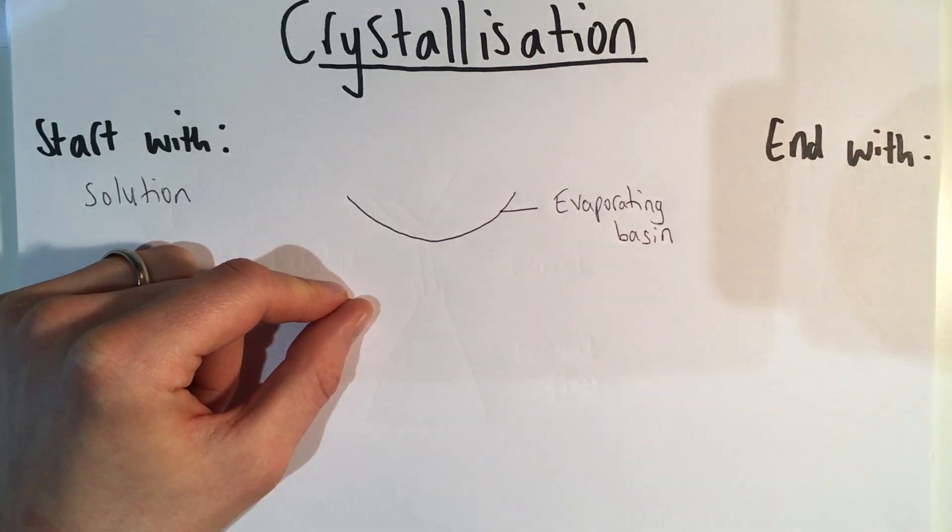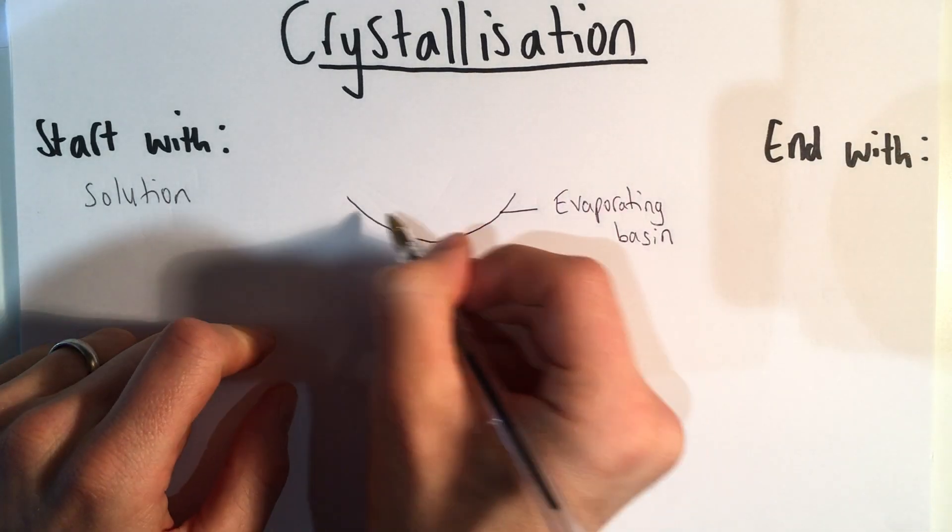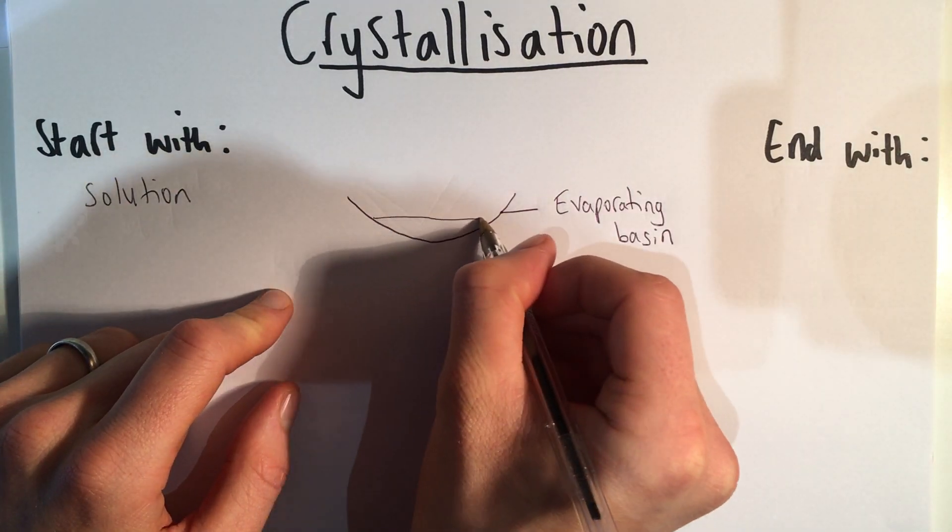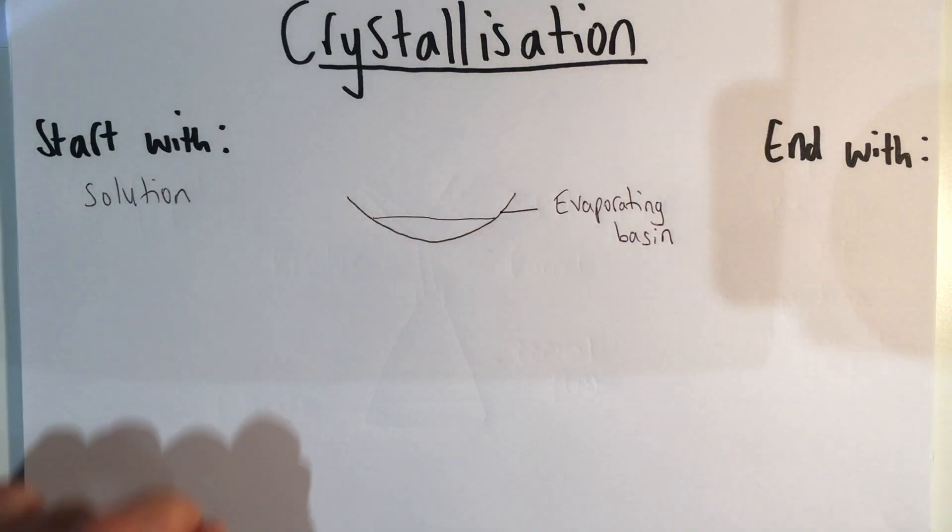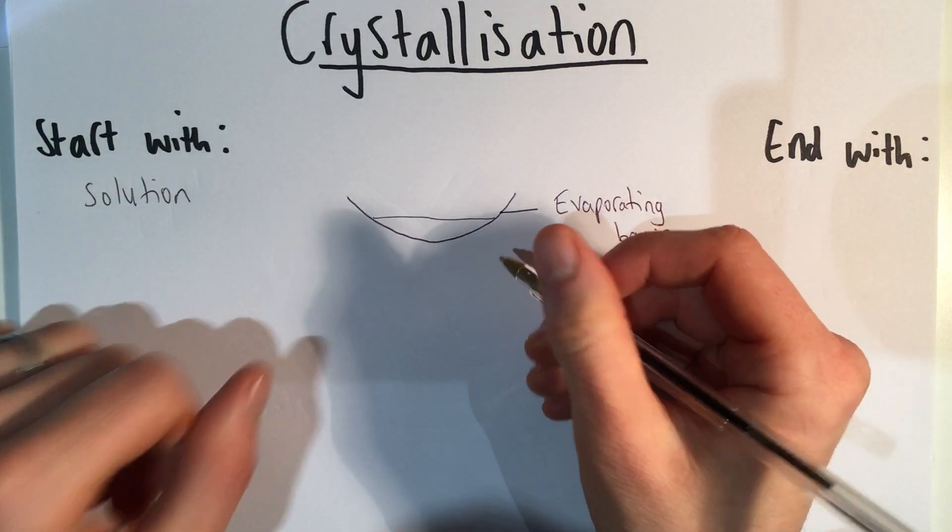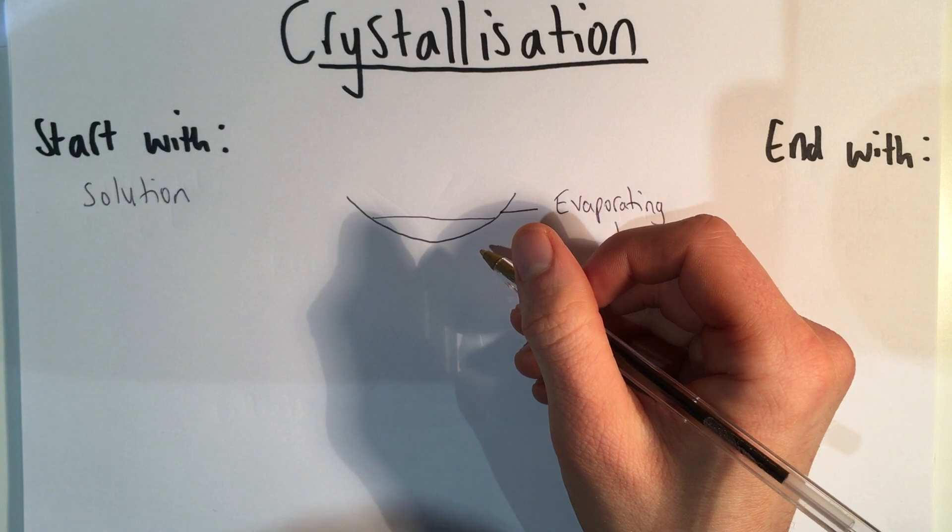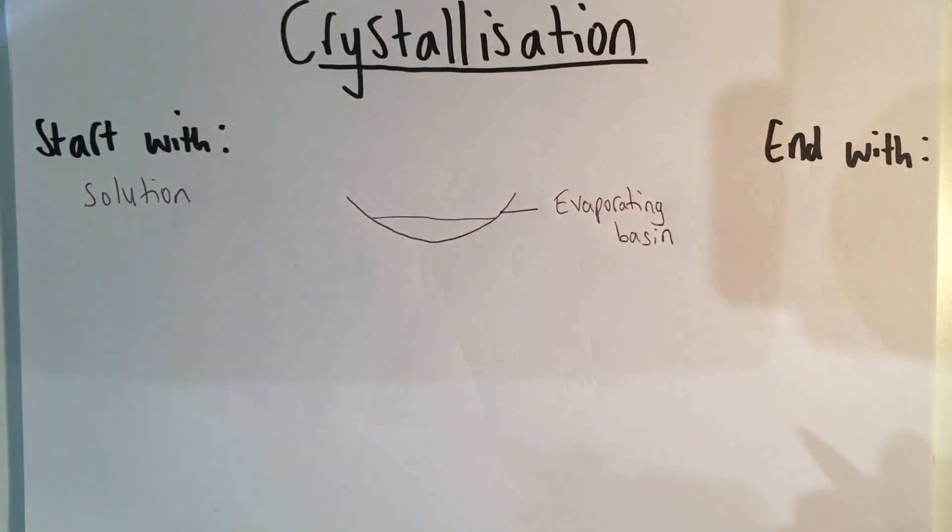We'd fill that with our solution, not all the way to the top, about halfway. To get that water to evaporate more quickly though, we would want to heat it. So to heat it, we're going to use a Bunsen burner.